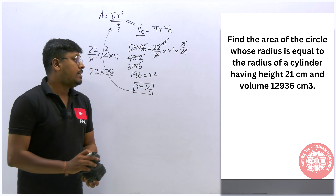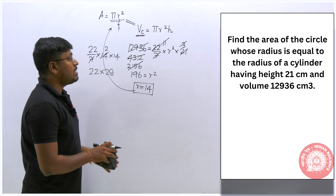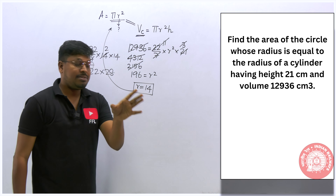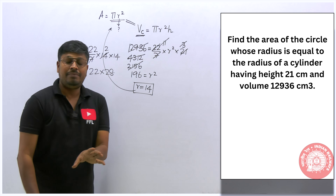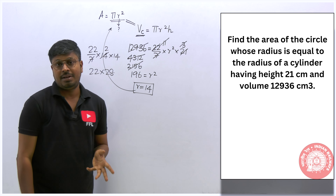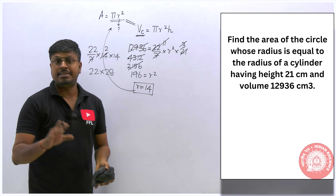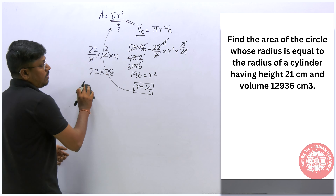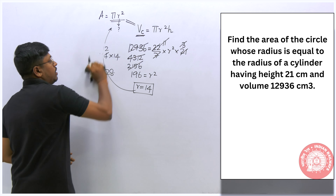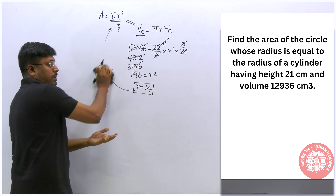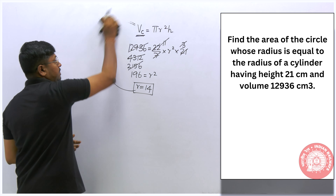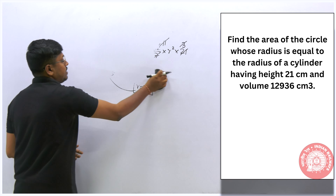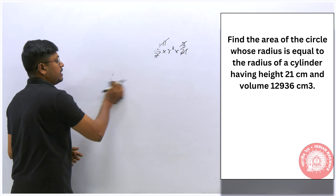Now finding the area of the circle: πr² = (22/7) × 14 × 14 = 22 × 28 = 616 cm². That is the answer. If you know the formulas, measurement questions are very easy — make sure to learn all five 3D and four 2D important shape formulas.